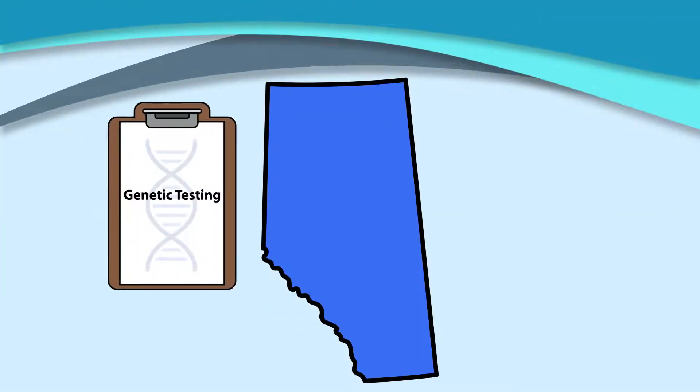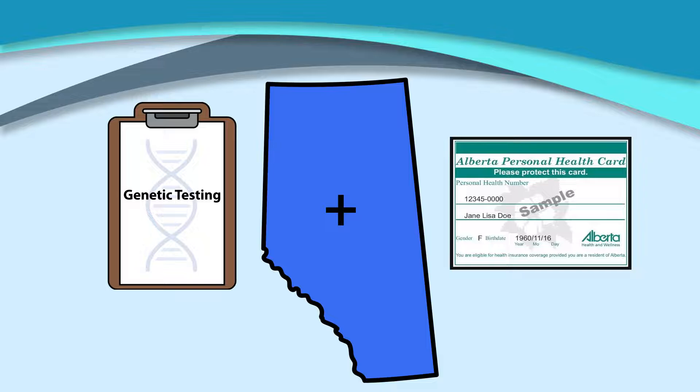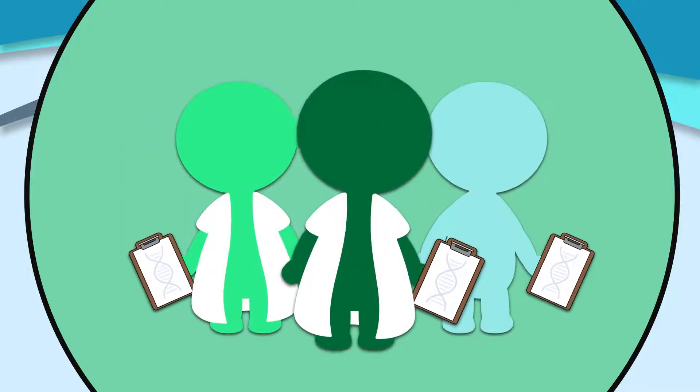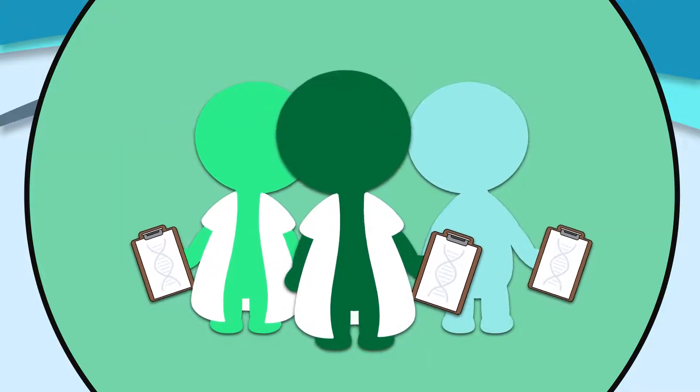In Alberta, genetic testing is covered by Alberta HealthCare if your personal history or personal and family history is suspicious for hereditary cancer. Genetic counselors and doctors look at many factors to help make this decision.